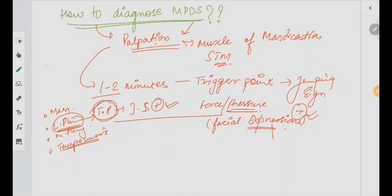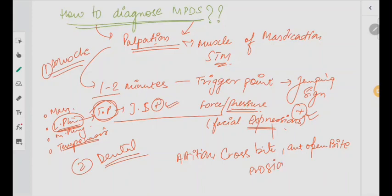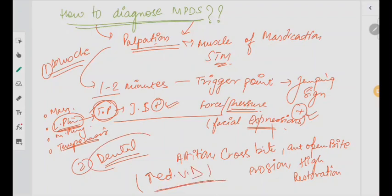Now coming to dental diagnosis: certain things you have to notice include attrition, crossbite, anterior open bite, erosion, or high restorations which disturb your occlusion. Increased vertical dimension should also be checked. These are certain dental points you can look for.